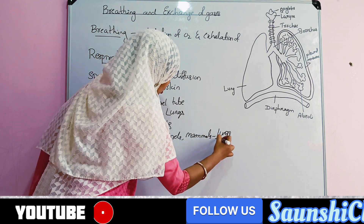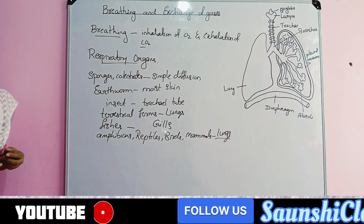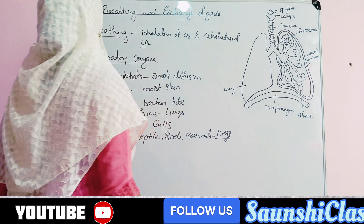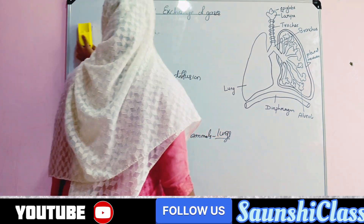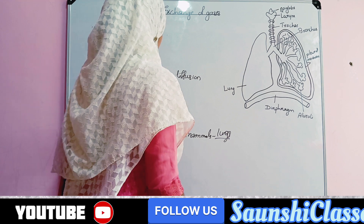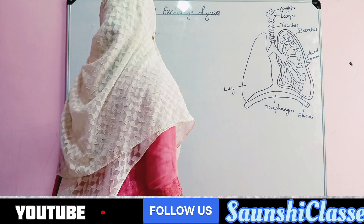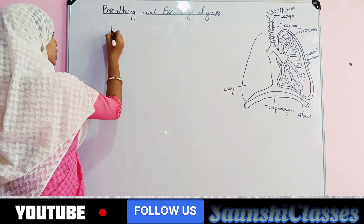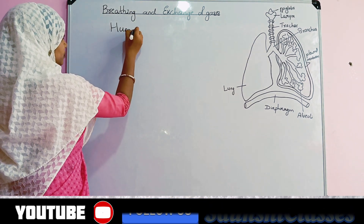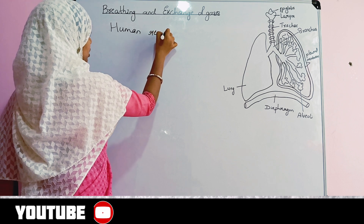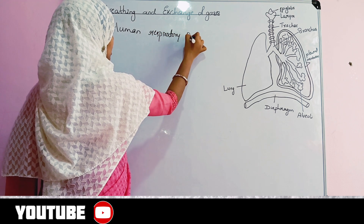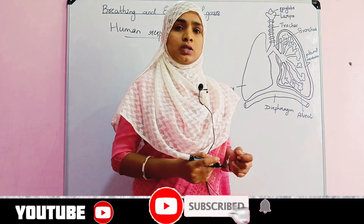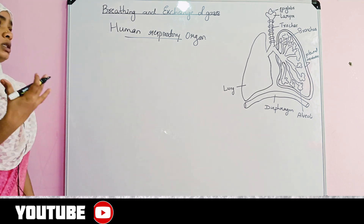Now let's see how the human respiratory system is arranged and which are the different respiratory organs. The mean respiratory organ in humans is the lungs. Let's go through the human respiratory organs one by one.